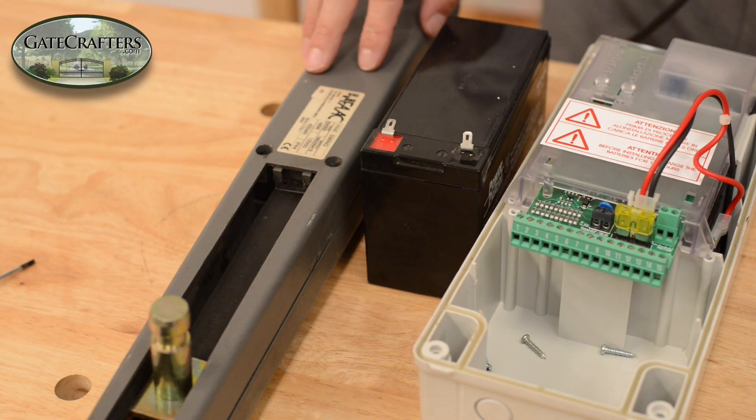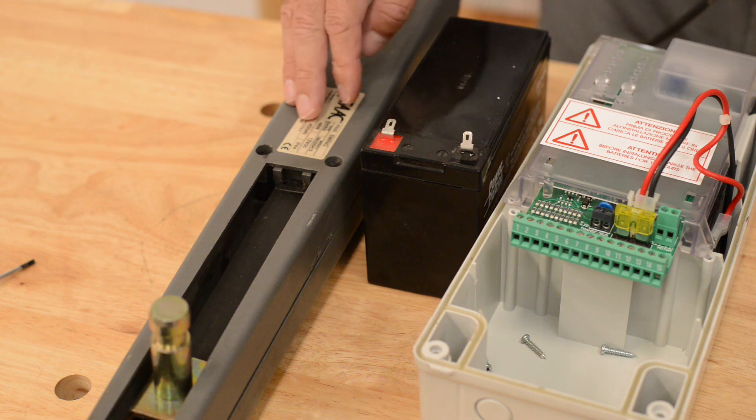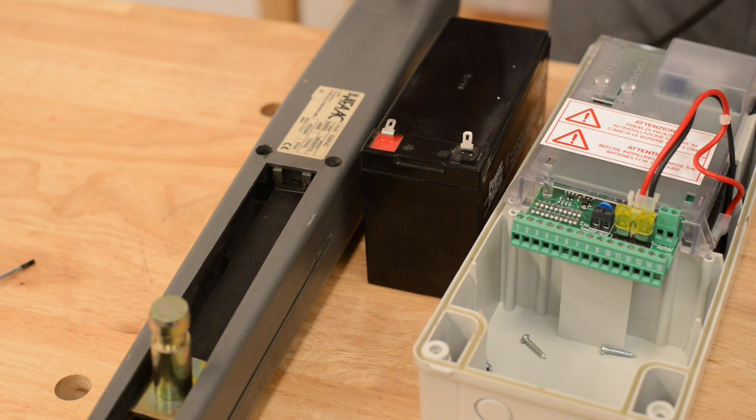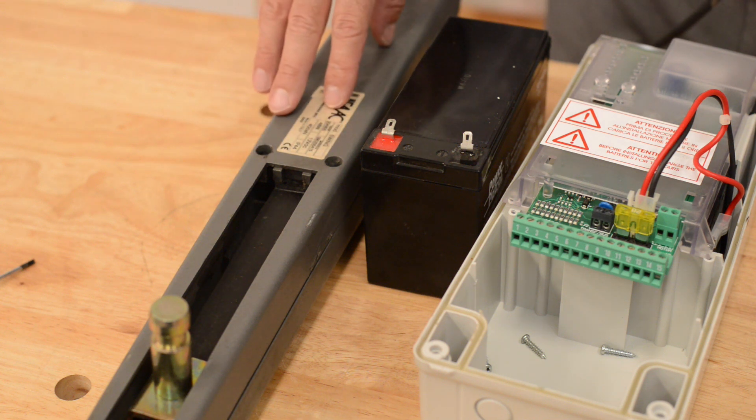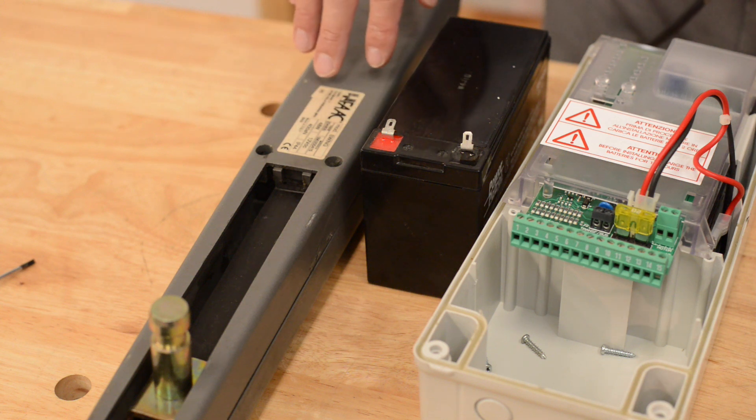One thing that is great about the ES1100 arms is the simplicity of them. They don't have any limit switches. The board actually uses revolutions of the motor and sensitivity to amperage differences to know where to stop in the open and close position.